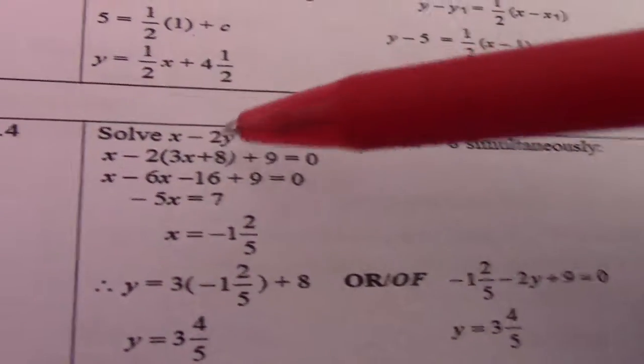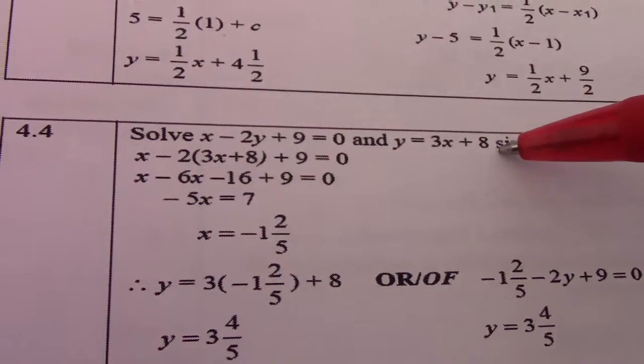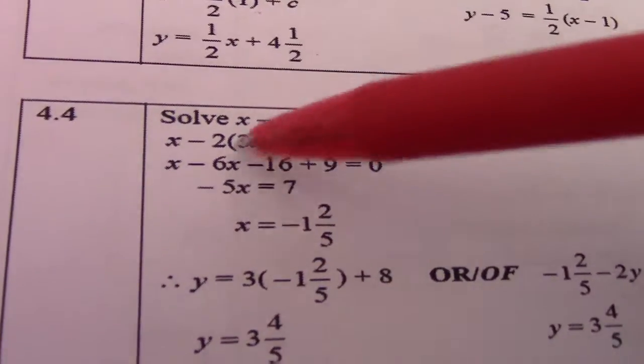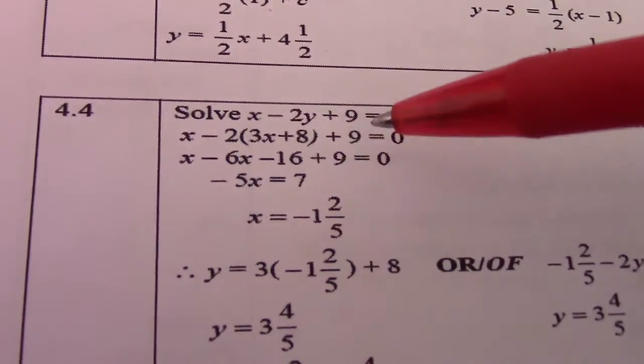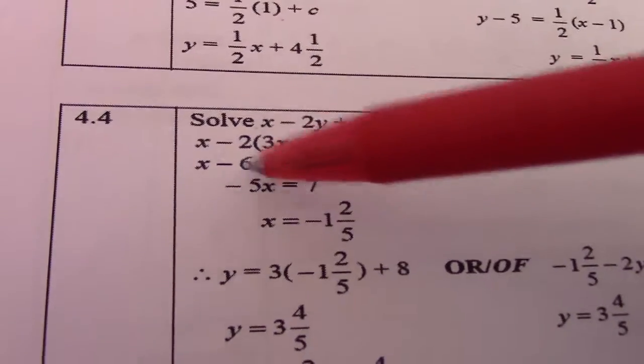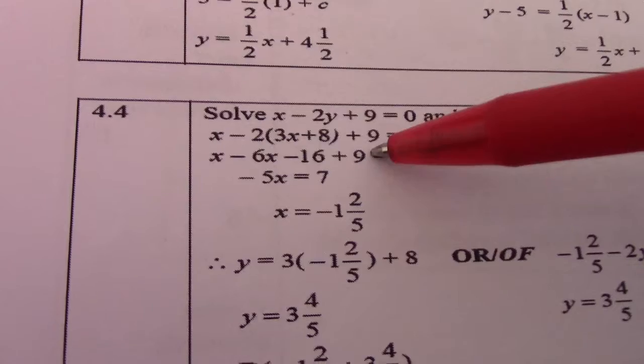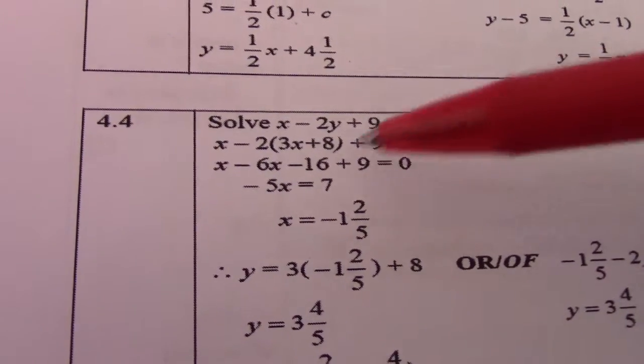Instead of writing y there, we just substitute y with 3x plus 8. So 2 times 3x gives me 6x, 2 times 8 gives me minus 16. If I simplify, minus 6x plus x gives me minus 5x. Minus 16 plus 9 is negative 7.